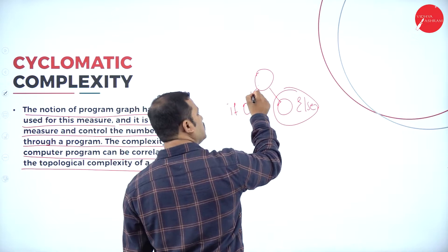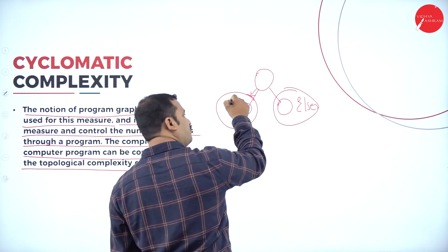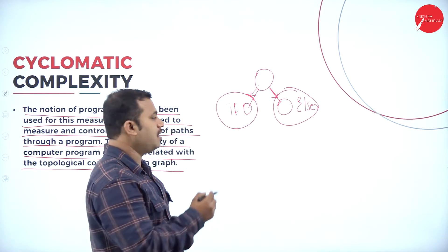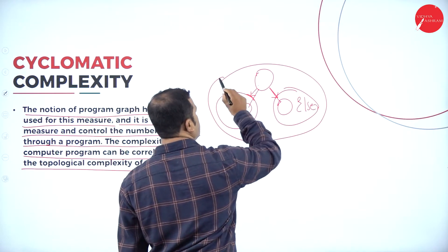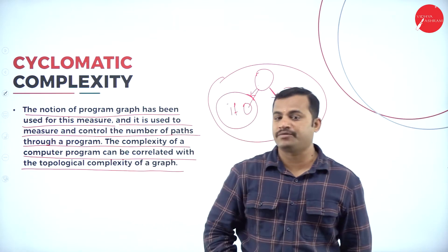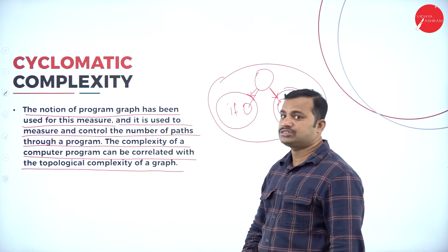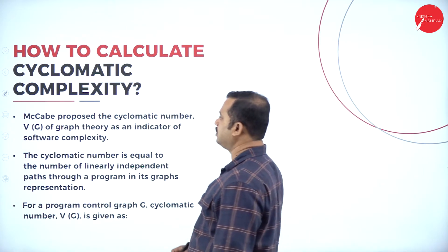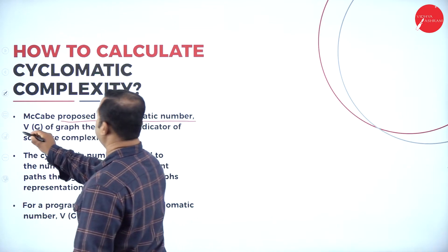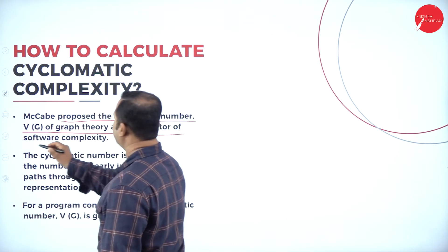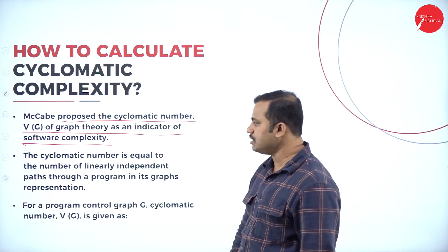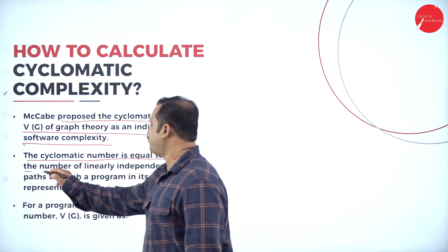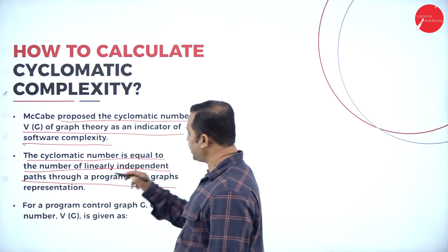If the condition always moves to the if block, the complexity is considered for the if block. At one point, it jumps to the else block and comes out of the looping statement containing the if statement. McCabe also proposed the cyclomatic number V(G) from graph theory as an indicator of software complexity. The cyclomatic number is equal to the number of linearly independent paths through a program in its graph representation.